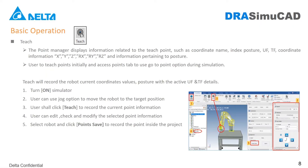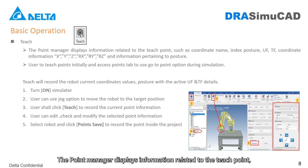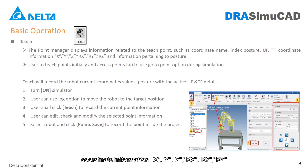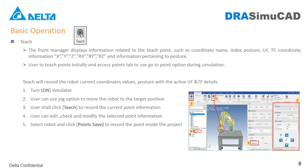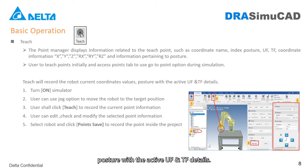Teach Button: The point manager displays information related to the TEACH point, such as coordinate name, index posture, UF, TF, coordinate information — X, Y, Z, RX, RY, RZ — and information pertaining to posture. Use it to teach points initially and access the points tab to use the go-to-point option during simulation. TEACH will record the robot's current coordinate values and posture with the active UF and TF details.